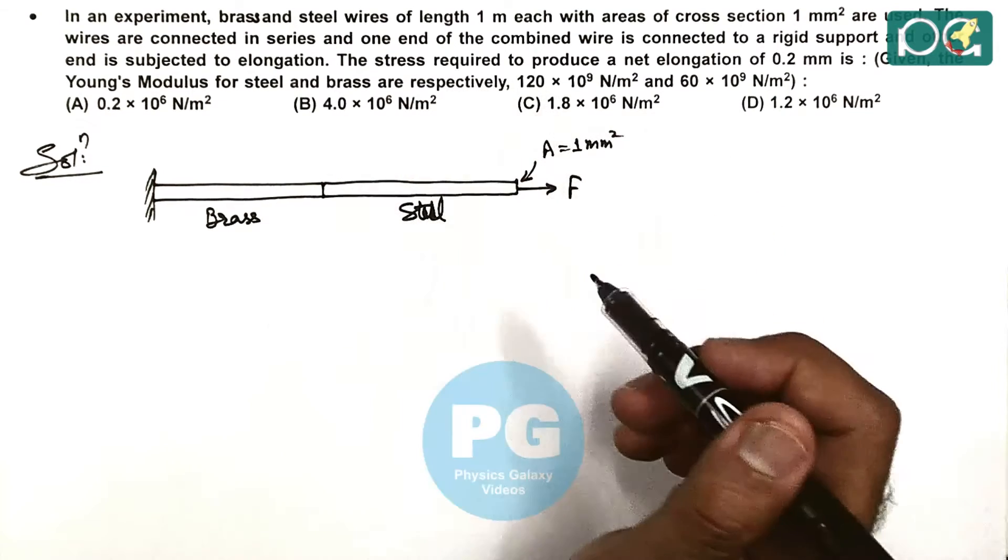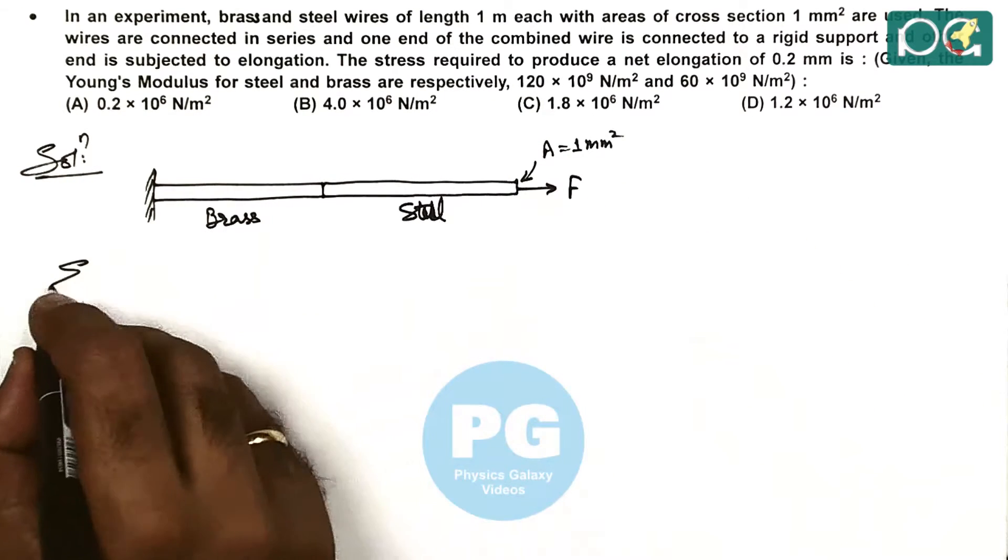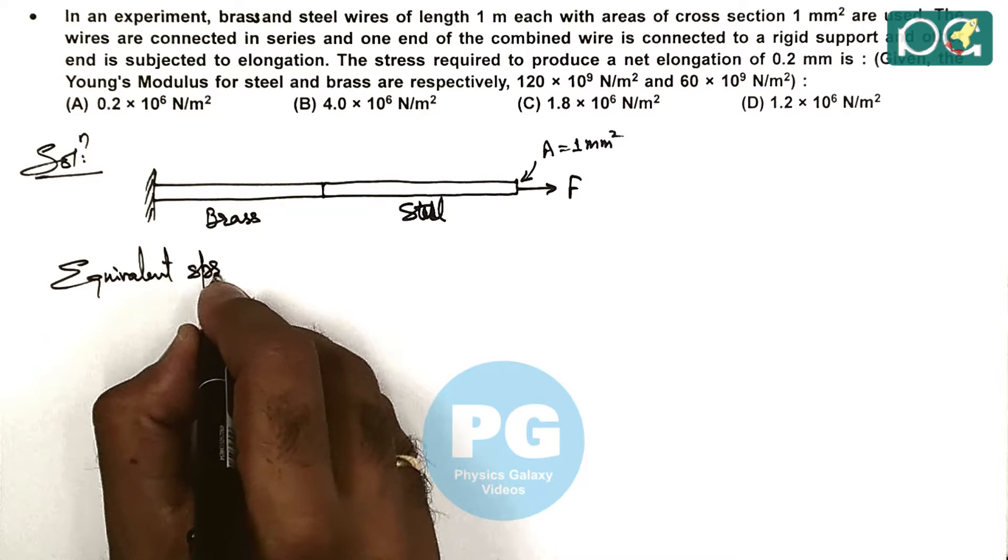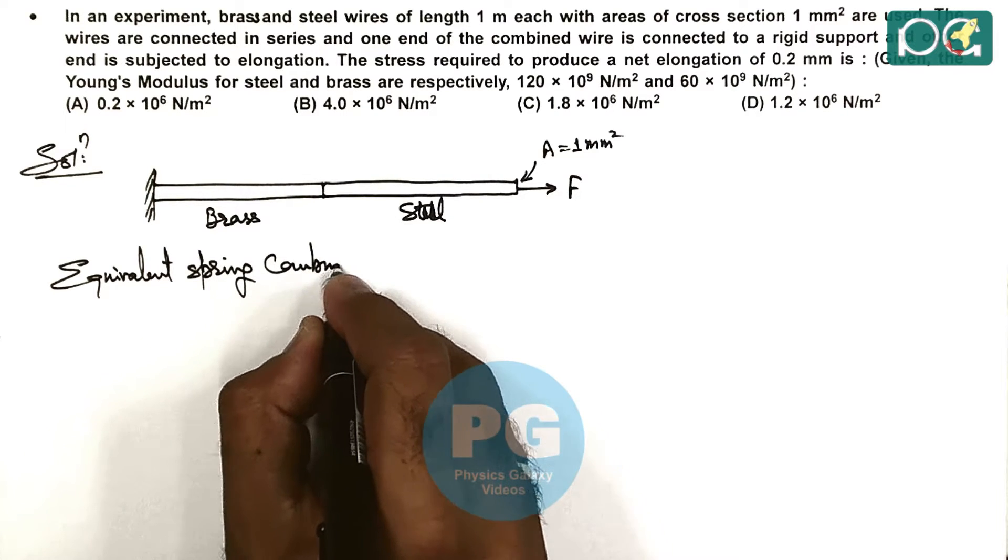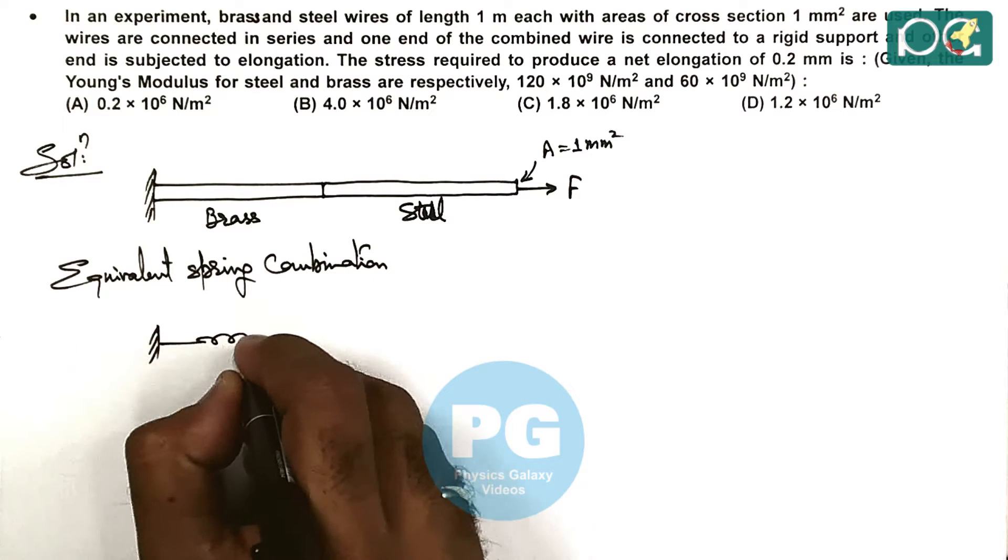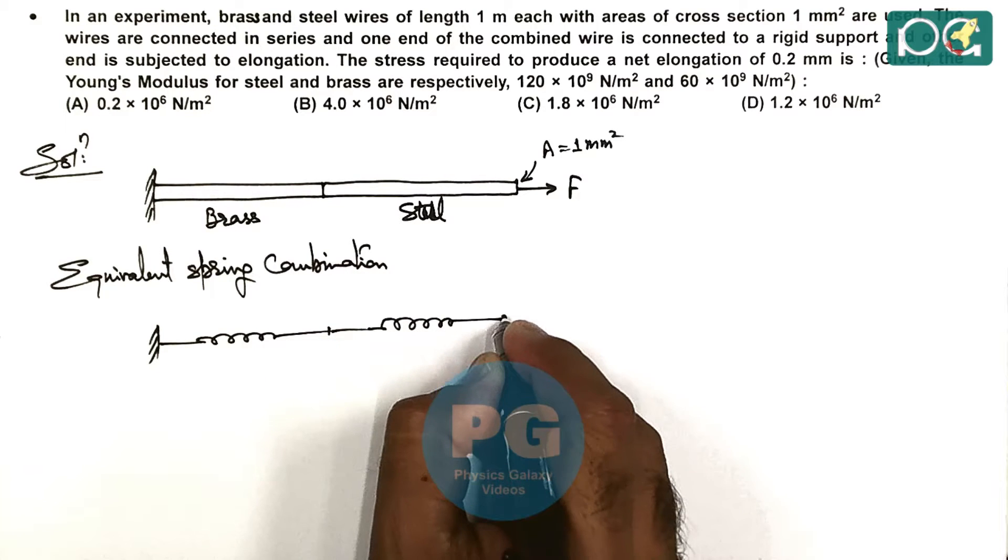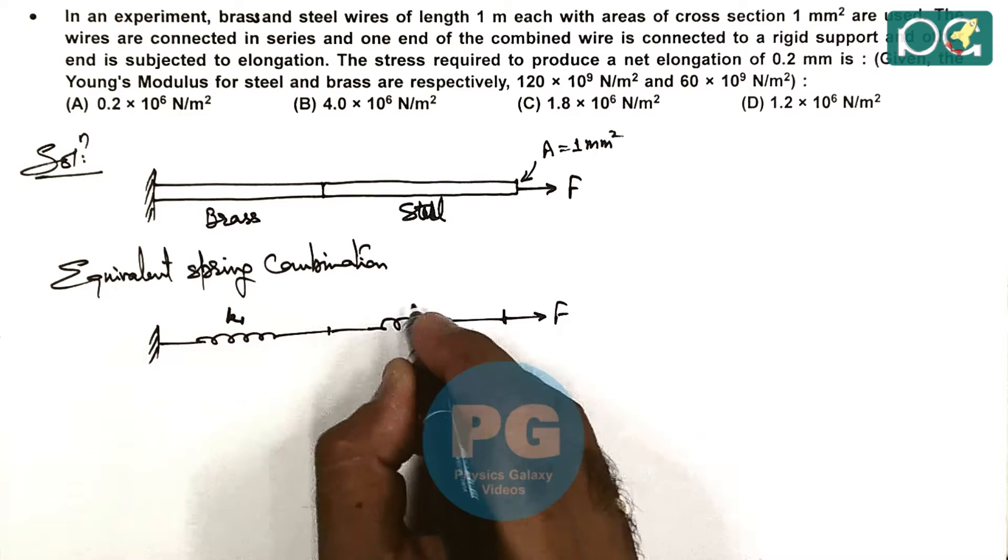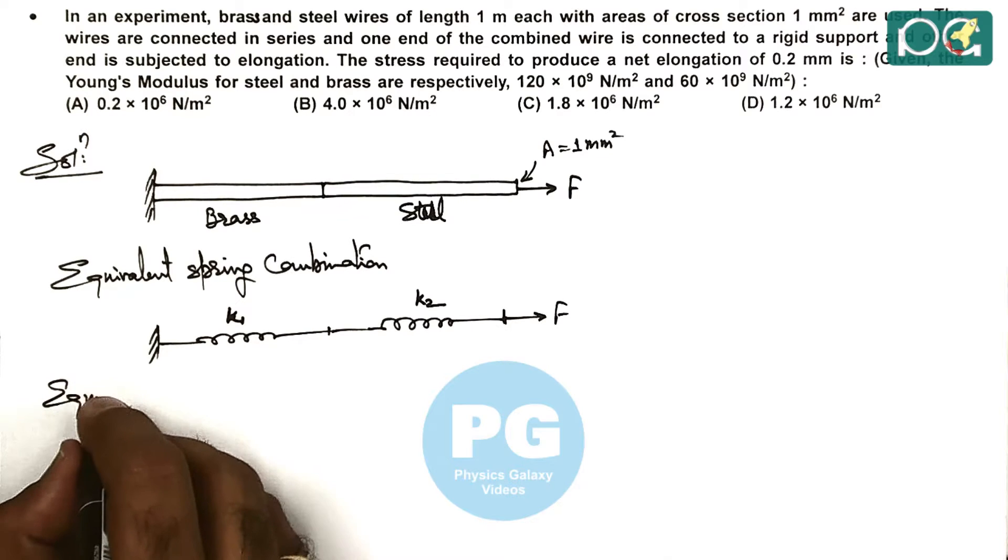In this case, the total elongation in the two wires is to be equal to 0.2 mm, so we are required to calculate the stress, that is F/A. Here we can consider the equivalent spring combination. In such case, one spring is of brass and the other is equivalent to the steel, and it is pulled with a force F. They can be considered to have force constants K1 and K2.